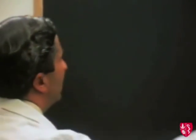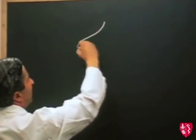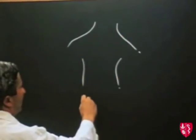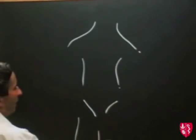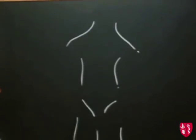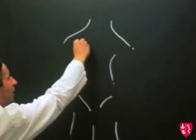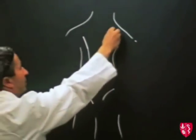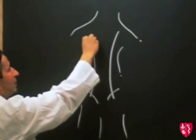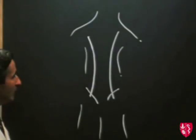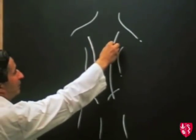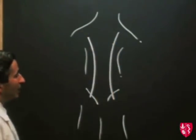First I would like to consider briefly the development of the breast. Looking at the fetus from the front we note the shoulder region, the side of the thorax, and down here the inguinal region and the legs. During development the ectoderm is thickened along a line extending from the region of the axilla down to the groin on either side. This thickening is referred to as the milk ridge. In the human subject the milk ridge persists in the pectoral region, but the remainder of the milk ridge disappears.